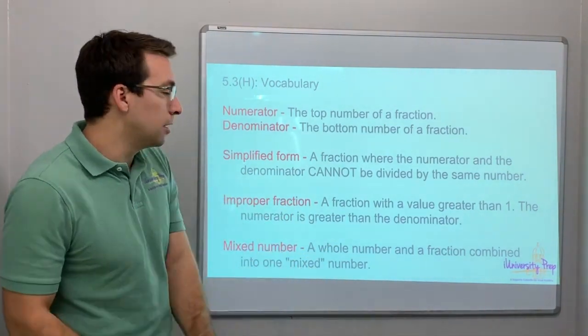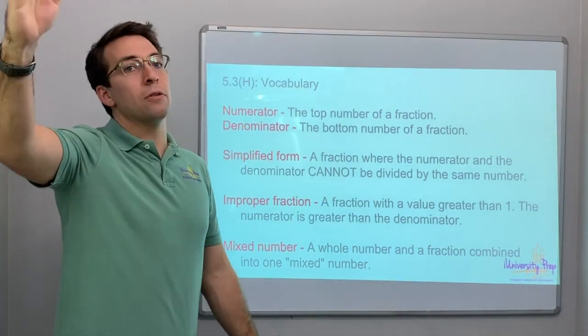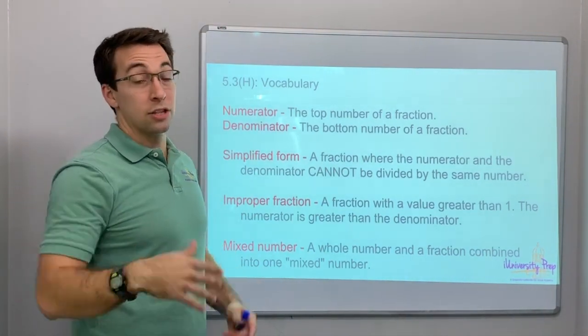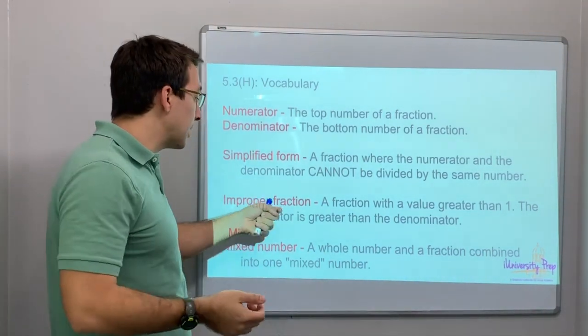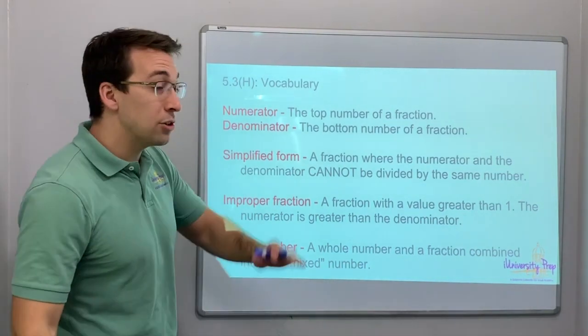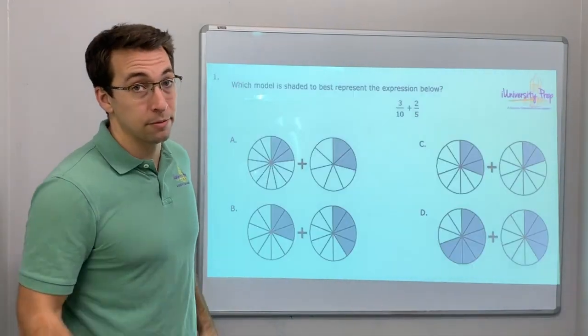Improper fraction — the numerator is bigger than the denominator. An improper fraction means it's greater than one. A mixed number means you have a whole number and a fraction together.